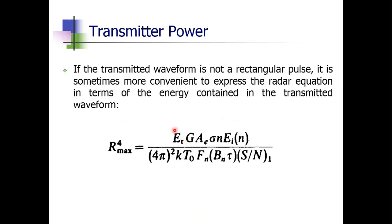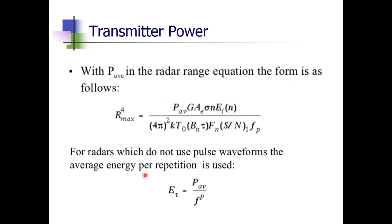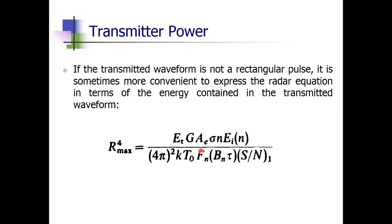If the transmitted waveform is not a rectangular pulse, it is more convenient to express the radar equation in terms of energy. Replacing P_avg/fp with Ep (energy per pulse) gives one form of the equation. For n pulses, Et = n × Ep is the total energy of n pulses. The final expression becomes: Rmax⁴ = Et × G × Ae × σ × ei(n) divided by the full denominator term. This is the complete transmitter power expression.